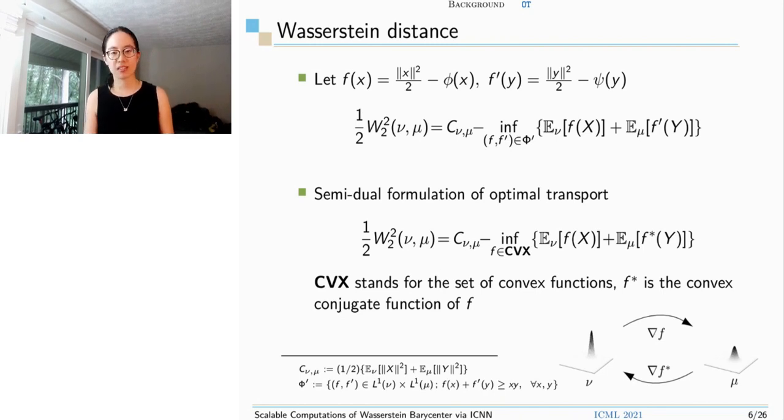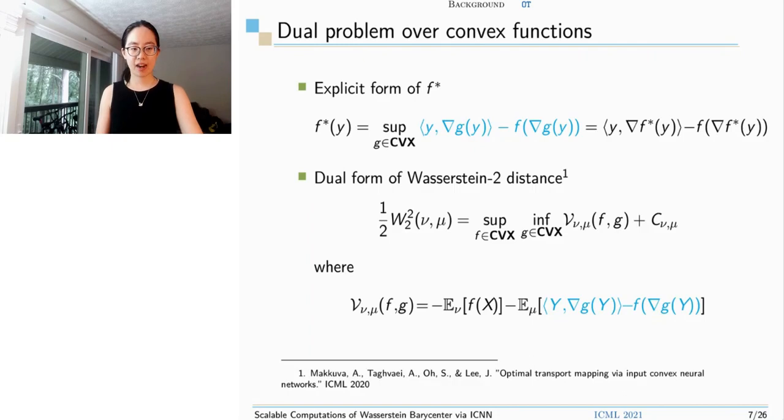However, this f star is still tricky in practice, because we don't know how to parameterize it easily. So we rewrite f star in this supremum formula. And it could be proved that the optimal g is exactly optimal f star, and g is a convex function. Thus, we got our final dual formula of Wasserstein 2 distance just by plugging in this explicit form of f star. The highlighted trunk in this capital V is exactly f star.